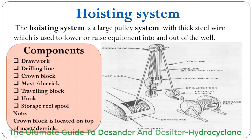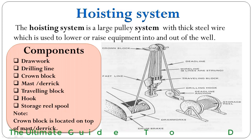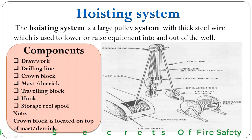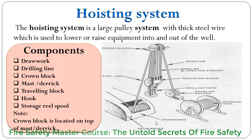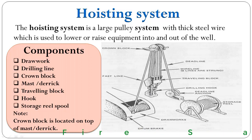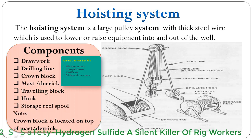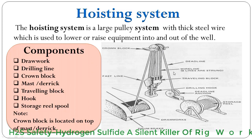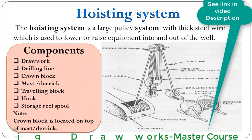When the drilling line is reeled out from the draw works drum, the hook and traveling block move down, lowering the drill string. When we reel in the drilling line on the draw works drum, the hook and traveling block move up, raising the drill string. The part of the line between the crown block and draw works is called the fast line, because it moves at the fastest speed. The part between the crown block and the deadline anchor is called the deadline, because it remains stationary.